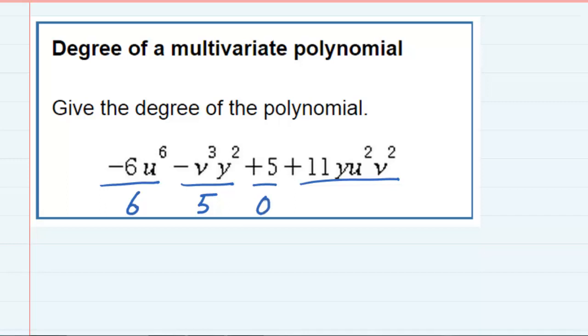And the last term has a y, which is to the first power, a u^2 and a v^2, multiple variables, so I add up all of those exponents, and I get five.